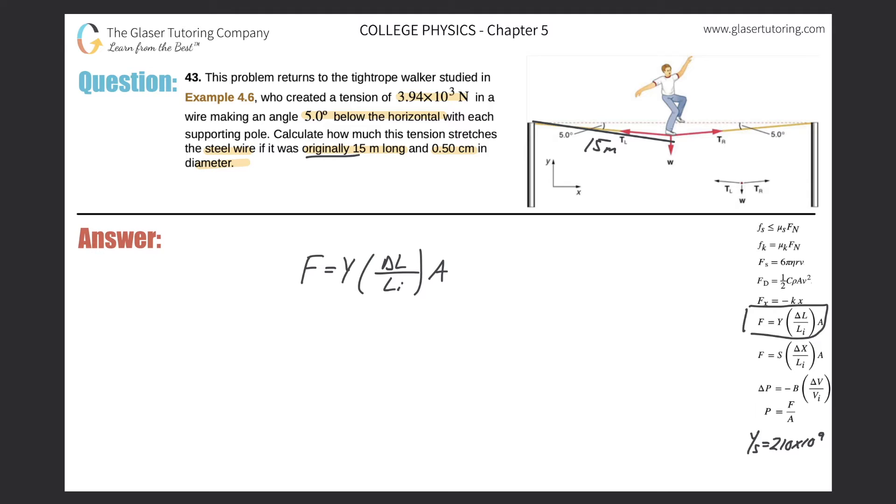We're looking for delta L. Solving this for delta L - Y and A are numerator values, so when you bring them to the other side they go in the denominator, and this denominator value goes into the numerator. We need to know these four things. We do know the force - the tensional force is 3.94 times 10 to the third.